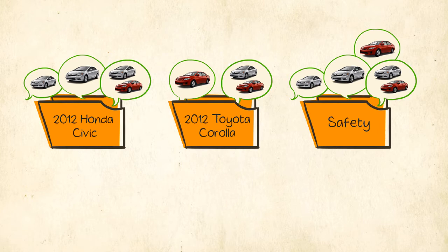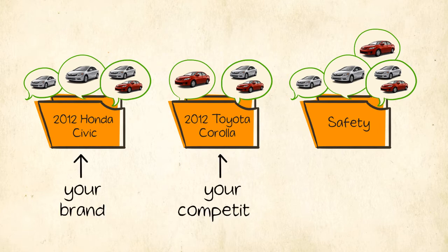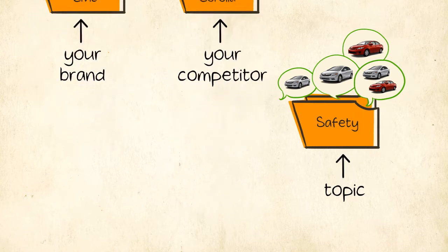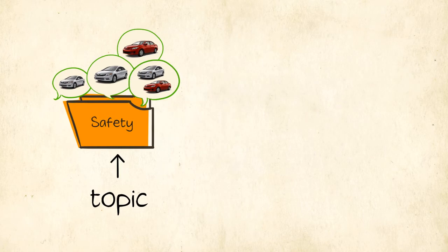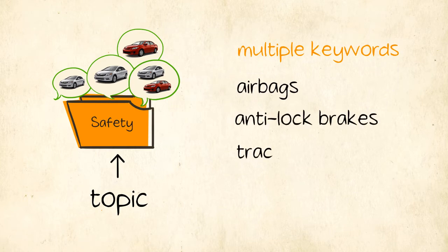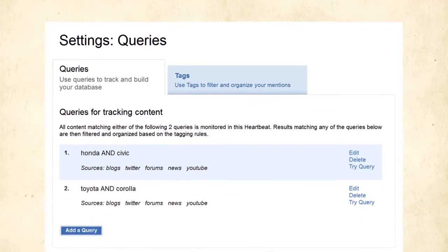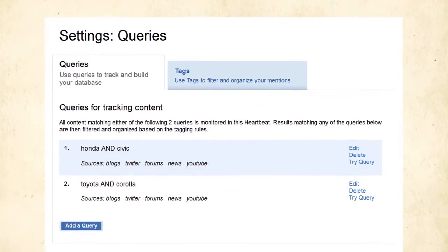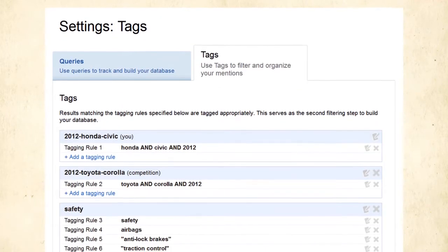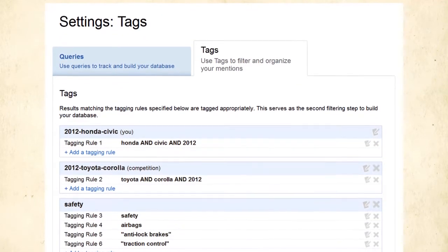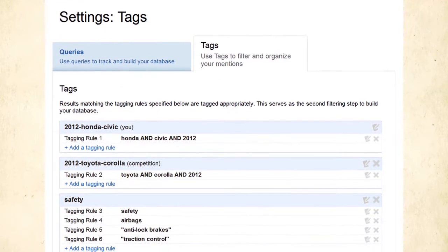The first two tags are for mentions of your brand and competitor. The third tag, safety, is a topic which can include multiple keywords in its tagging rule, such as airbags, anti-lock brakes, or traction control. We are presenting simple queries and tags, but you can be as precise and detailed as you need in order to achieve your desired results.